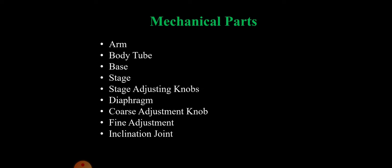In mechanical parts there are so many parts included. First one is arm, body tube, base, stage, stage adjusting knobs or adjusting knobs, diaphragm, coarse adjustment knob, fine adjustment, and inclination joint.